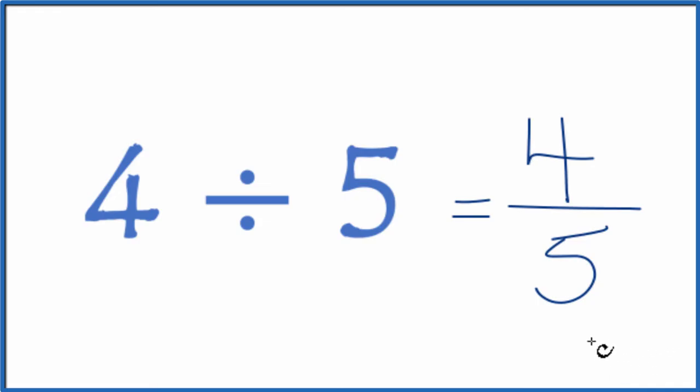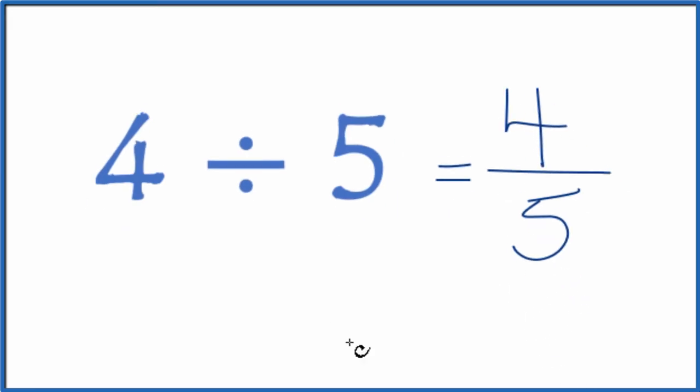If we wanted to find a decimal, though, we want to know how many times 5 goes into 4. 5 is bigger than 4, so we know it's going to be less than 1. So let's try this.